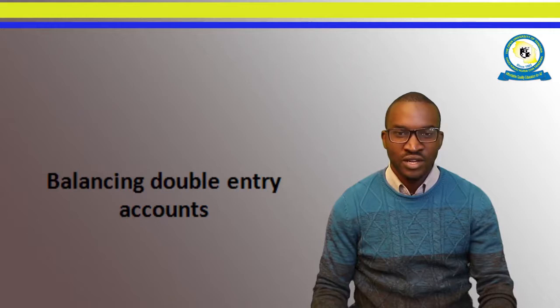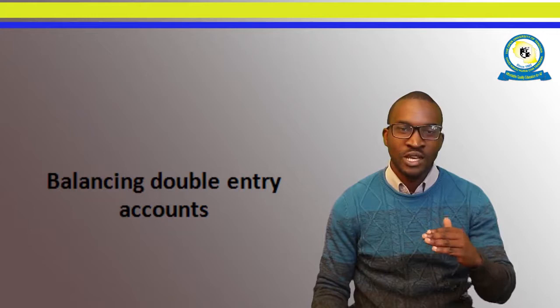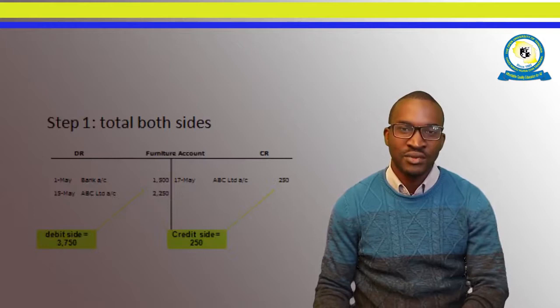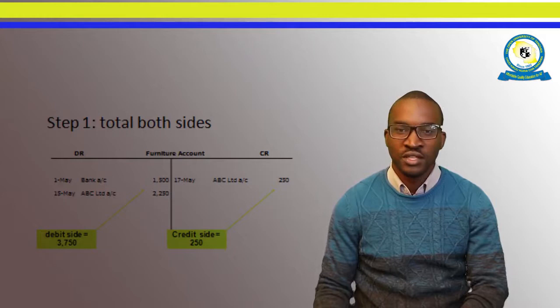You will see I have slides here with examples so that if you follow step by step, you will be able to close or balance the double entry account. The first step when you have an account — I am going to be using the T account as you can see in the slide — is you have to total both sides of the account.